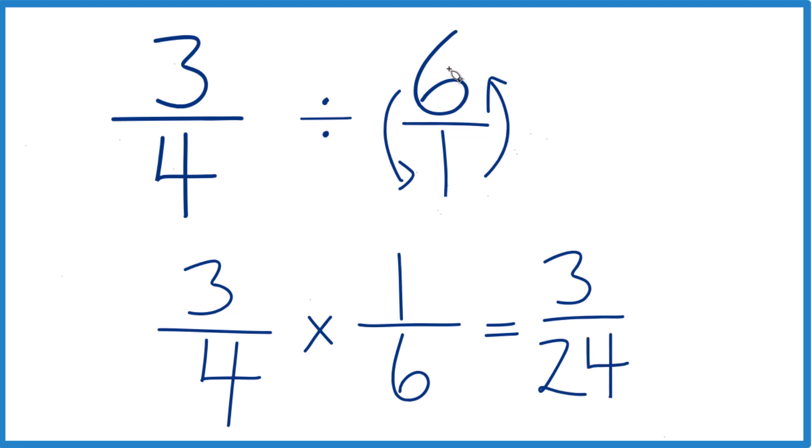So 3 fourths divided by 6, that gives us 3 24ths. But we can simplify this further, because 3 goes into itself, and 24 evenly.